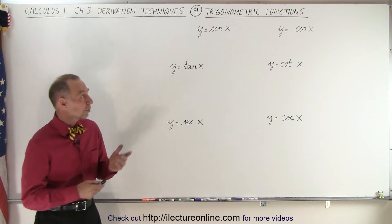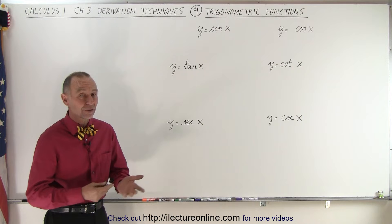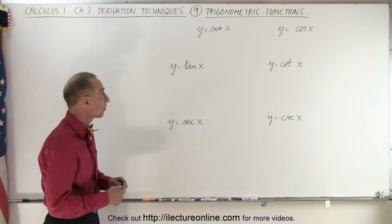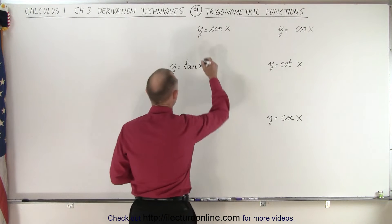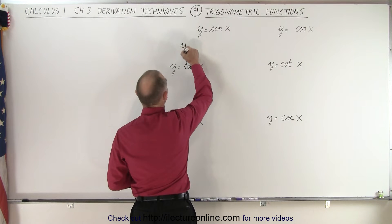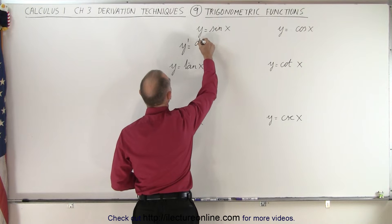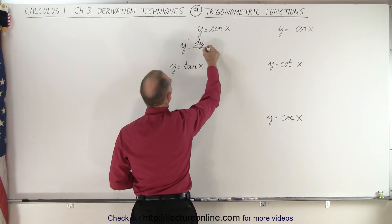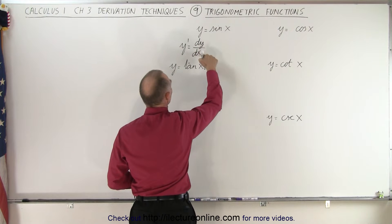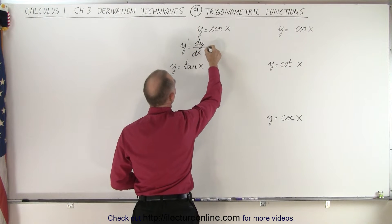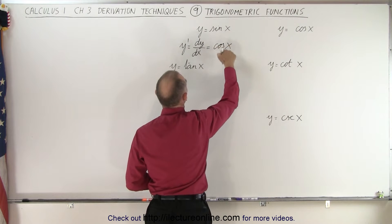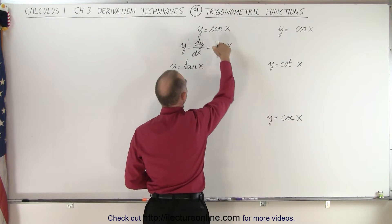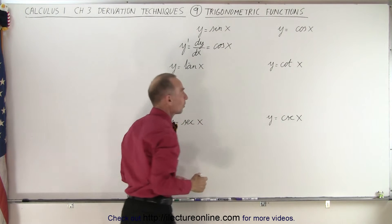We're starting with the sine and the cosine. If y equals the sine of x, the derivative y prime — which is the same as dy/dx, the derivative of the function y with respect to x — is going to be equal to simply the cosine of x. So the derivative of the sine is the cosine.